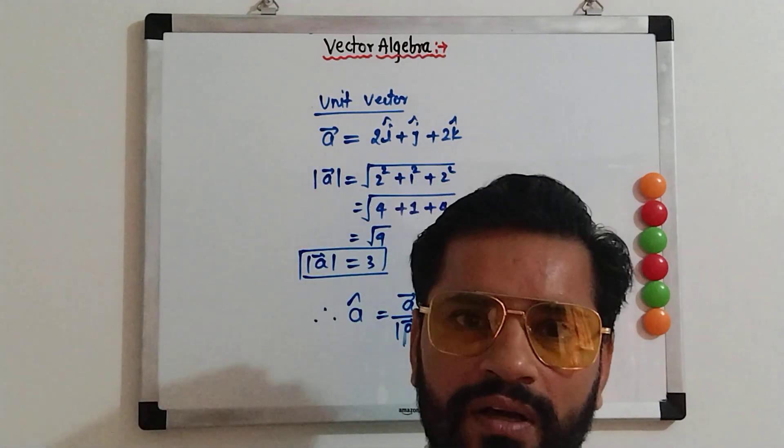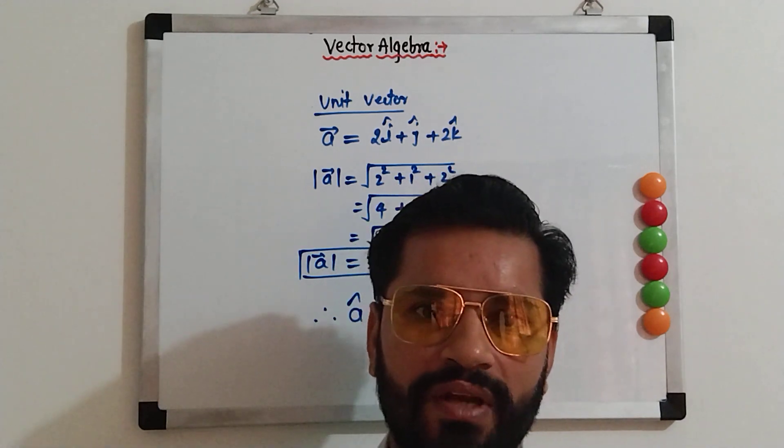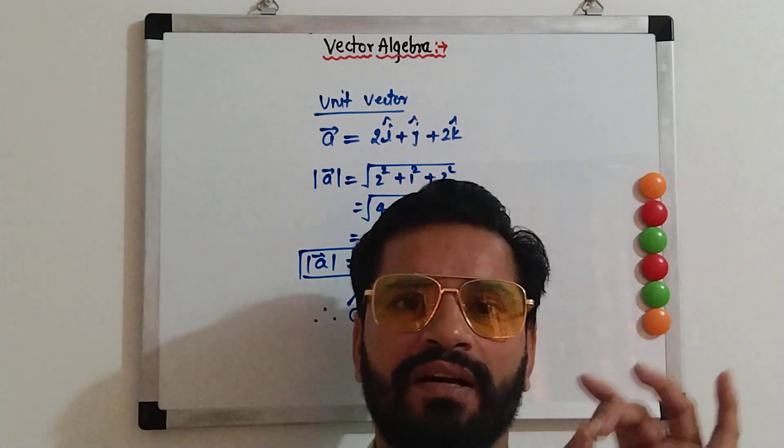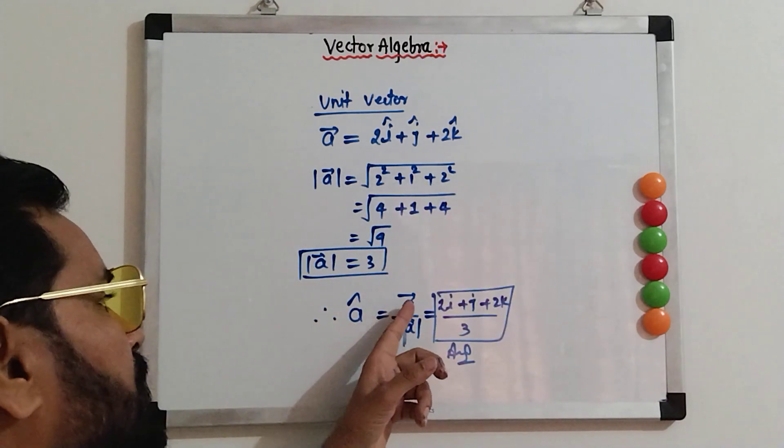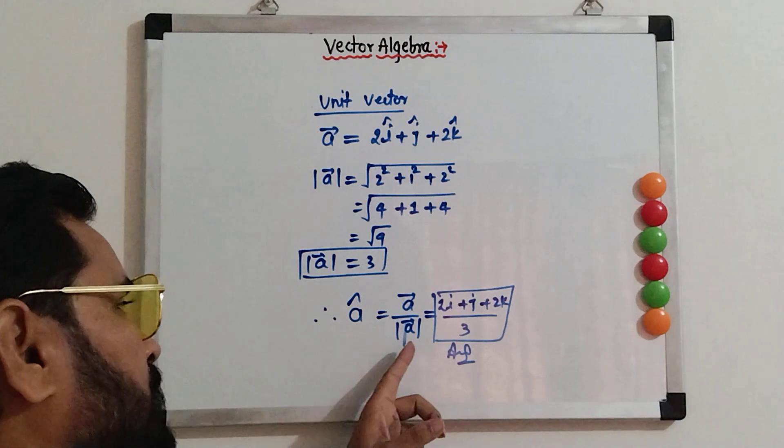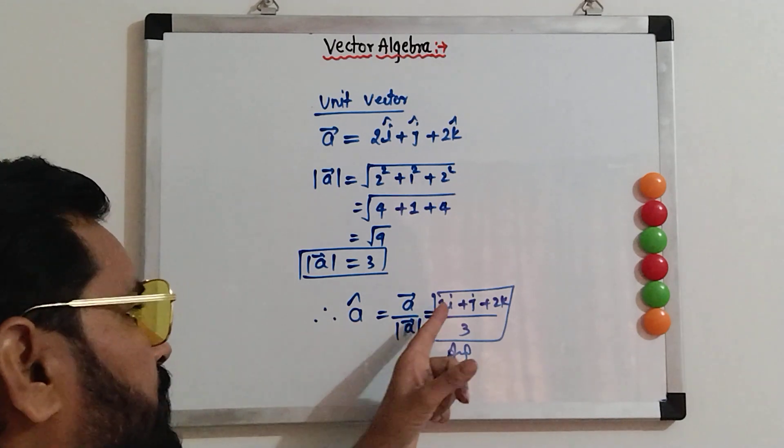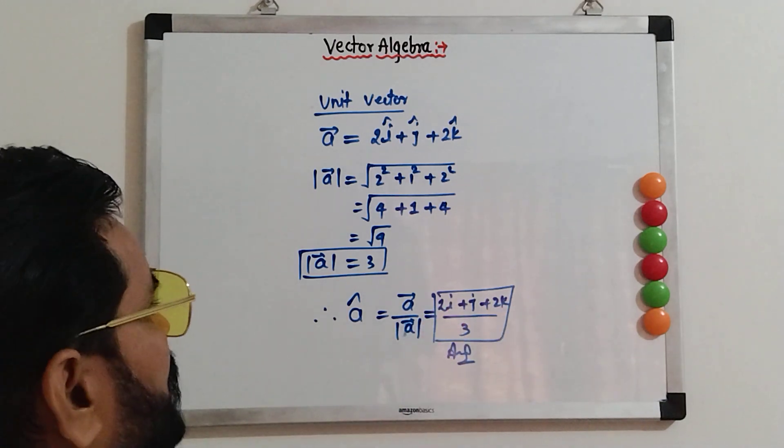So, in this video, we study about the magnitude and the unit of a vector. Unit vector formula is a cap is equal to a vector upon mod a. Mod a means magnitude.